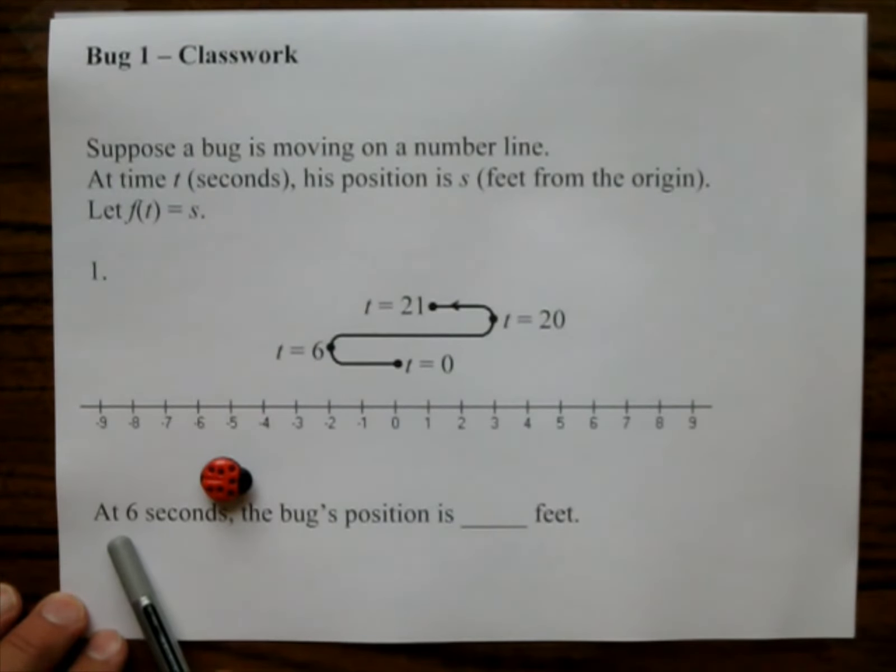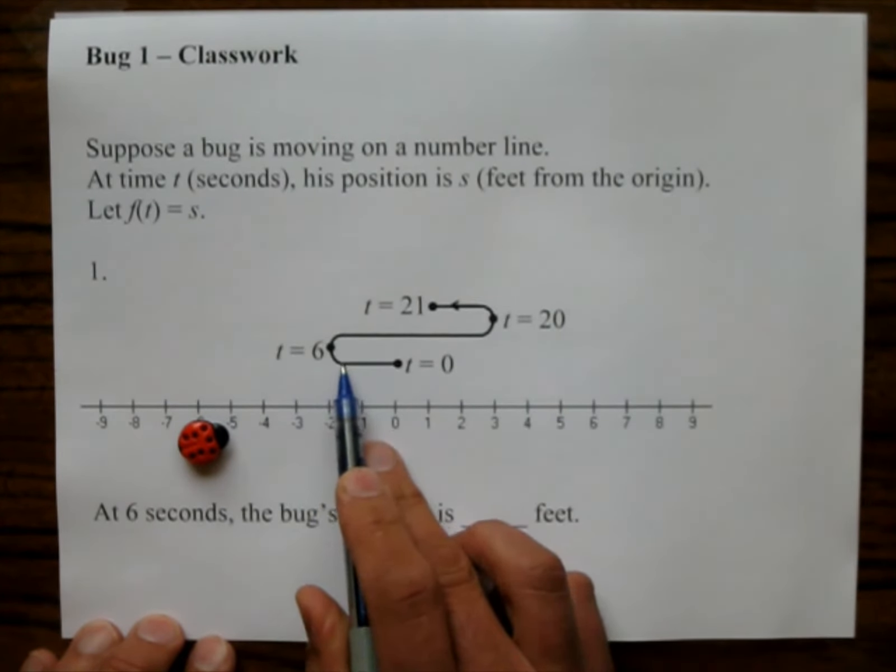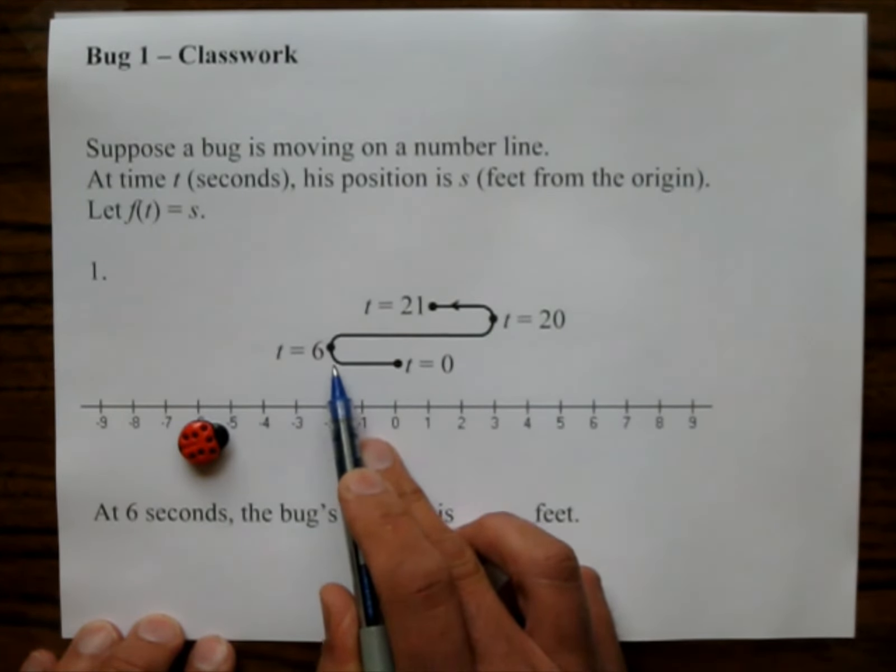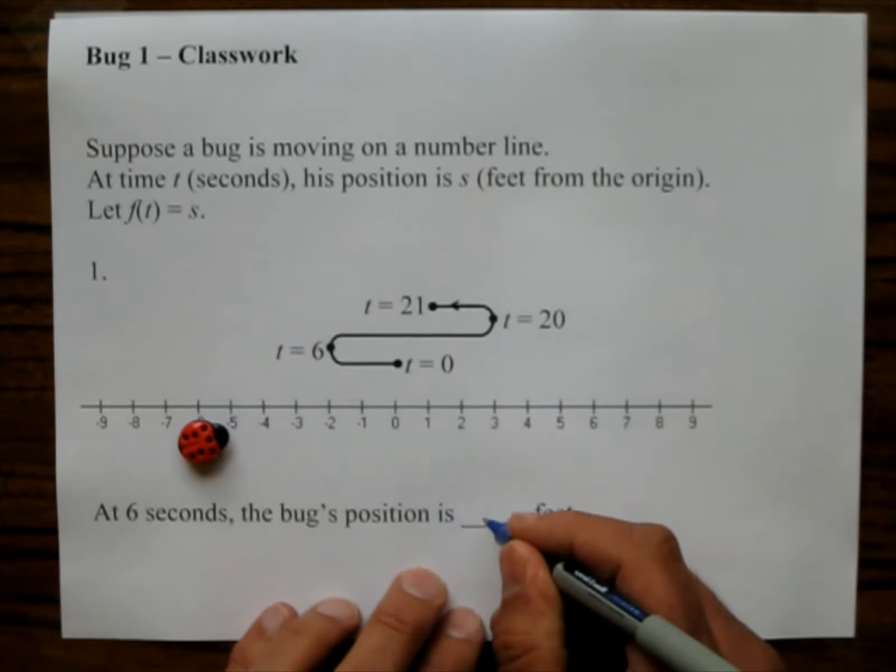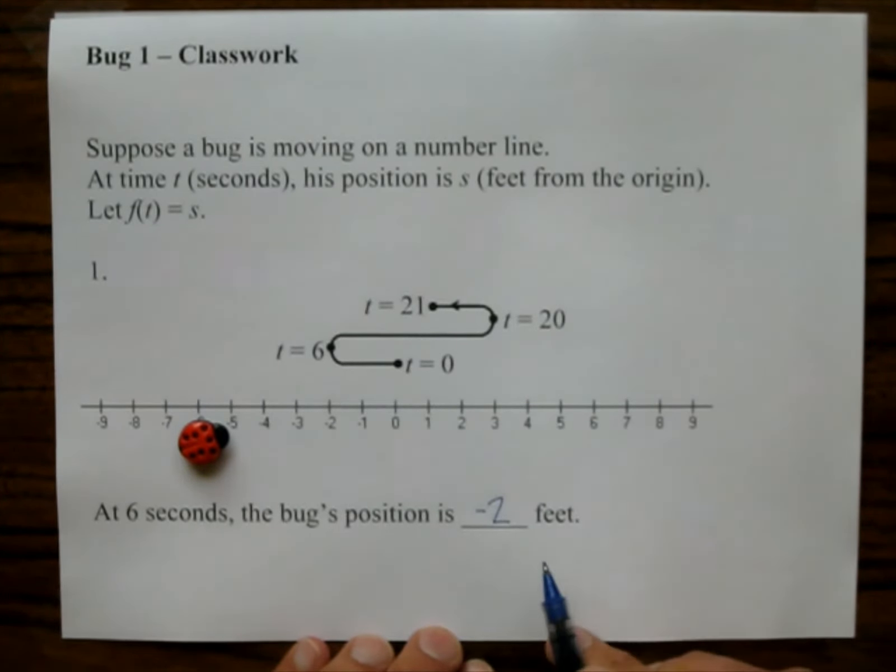So this question here just wants you to get used to this. It says at 6 seconds, the bug's position is how many feet? So at 6 seconds, well we have time 6. Where is the bug at 6? The bug is at negative 2 feet. So that is the answer there.